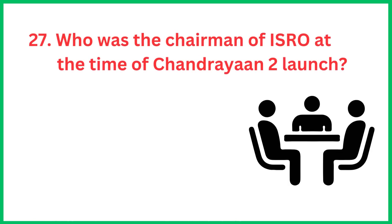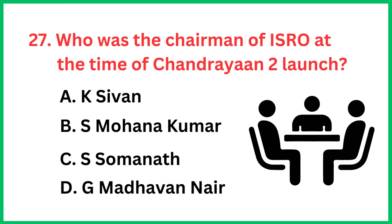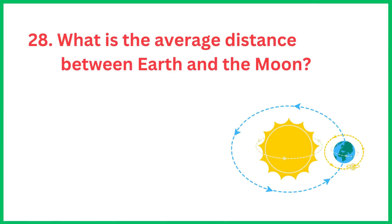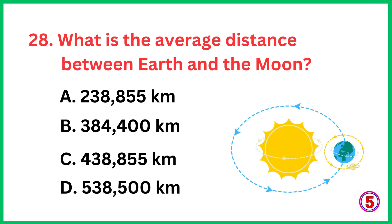Who was the chairman of ISRO at the time of Chandrayaan-2 launch? The correct answer is option A, K. Sivan.